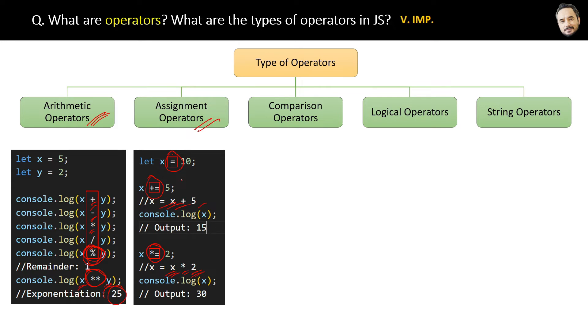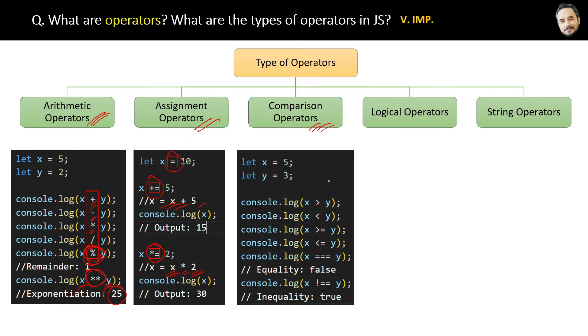Then the third category is comparison operators, and here they are: greater than, less than, greater than equal to, less than equal to. This second-last one is the equality operator which will check whether these two operands x and y are equal or not. And the last one is the inequality operator, which is just the opposite of the equality operator. These comparison operator results are always either true or false.